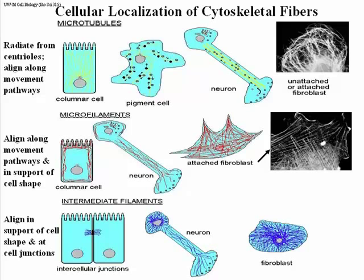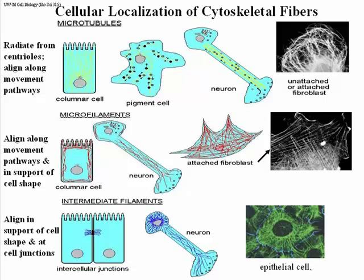Intermediate filaments are found throughout a neuron, but also along the long axis of the axon, conferring stability to this long extended shape. And in a fibroblast, there is basically a meshwork of intermediate filament that surrounds the nucleus and then penetrates all over the cell in all directions — as you see when you use fluorescent antibodies to intermediate filament to localize them.